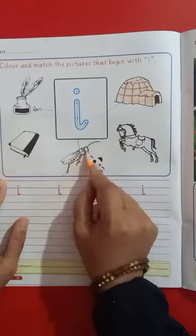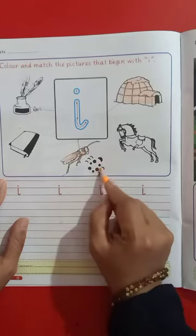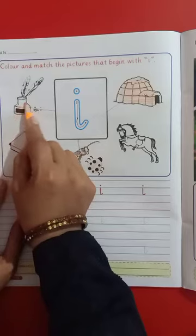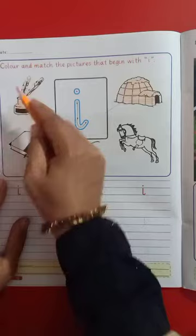Hame na achha sa color karna hai. Insect ko hame match kiya tha, I se start hota hai, hame na color kiya. Hame na ink pot, ink pot.